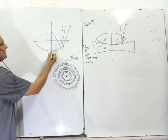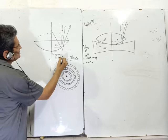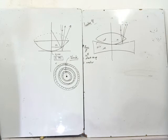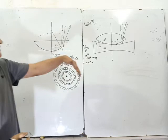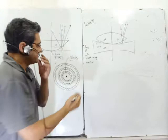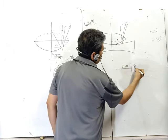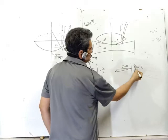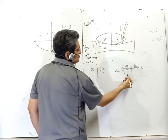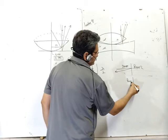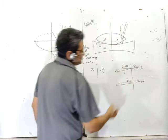Why is the central spot black? The path difference here is effectively zero — t is tending to 0. To write the formula for path difference, you need to know that when reflection occurs between different media, there is a phase difference of π, or a path difference of λ/2. When traveling in a denser medium with a rarer medium beyond, and reflection takes place, there is no phase change.